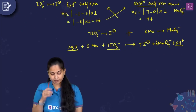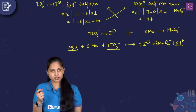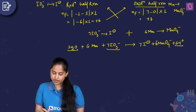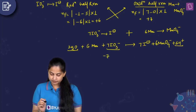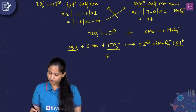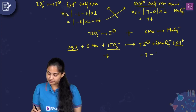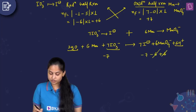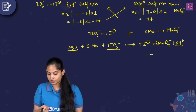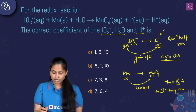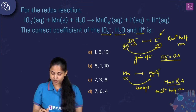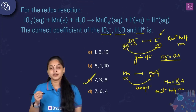The question asked for the coefficients of IO₃⁻, H₂O, and H⁺. Checking charges: left side has −7 charges; right side has −7 from 7 I⁻ minus 6 from 6 MnO₄⁻ plus 6 from 6 H⁺, which balances. The charges are balanced. The coefficient for iodide ion is 7, for H₂O it is 3, and for H⁺ it is 6.